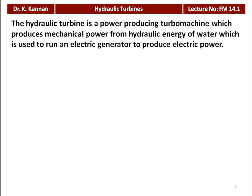A hydraulic turbine is a power-producing turbo machine which produces mechanical power from hydraulic energy of water, which is used to run the electrical generator to produce electric power. The centrifugal pump and reciprocating pump are power-absorbing machines — they absorb power and raise the head of water. But the hydraulic turbine works in the opposite direction: it takes hydraulic energy and converts it into mechanical power.